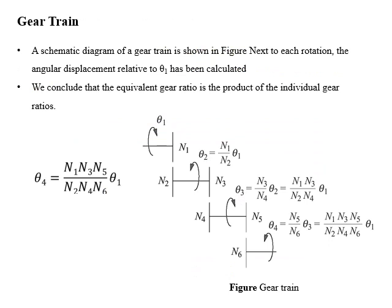The schematic diagram of a gear train is represented where angular displacement covered by the input is theta 1 of t. The second gear has angular displacement theta 2, equal to the ratio N1 over N2 multiplied by theta 1. The third stage has angular displacement theta 3, equal to the product of ratios N1/N2 and N3/N4 multiplied by theta 1. The fourth stage has angular displacement theta 4, equal to the product of ratios N1/N2, N3/N4, and N5/N6 multiplied by theta 1. With this gear ratio we can introduce changes in speed or torque.